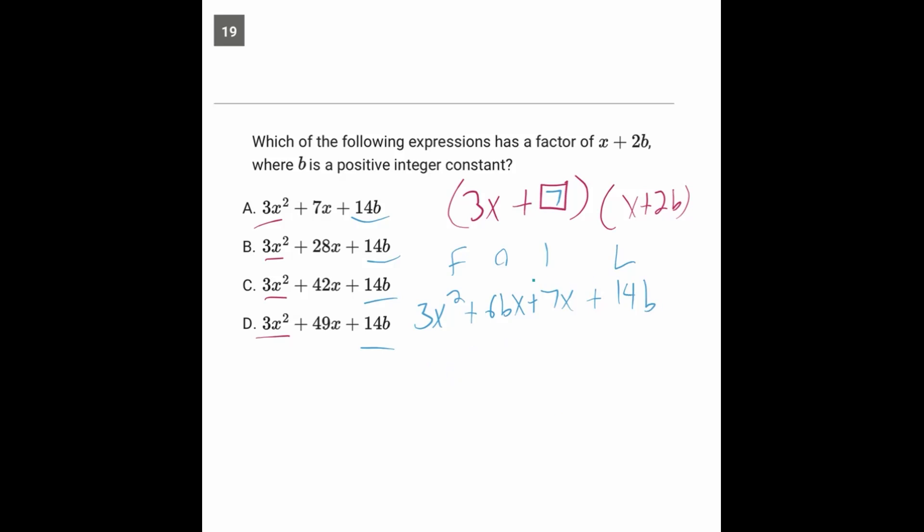Now a next kind of logical thing we can do from here is realize that if these two have x to them, then we can factor that out, and it'll leave us with 6b plus 7 in front of the x for the middle term. So you've got 3x squared plus 6b plus 7x plus 14b.